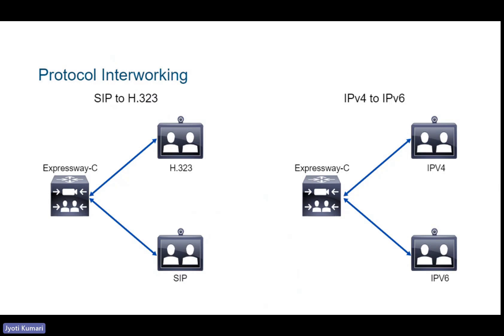Protocol interworking is supported on Expressway C, enabling H.323 and SIP endpoints to communicate with one another. This interworking feature is off by default. If you have different endpoints like SIP and H.323, or even IPv4 and IPv6 implementations in your network, you can enable interworking to make them work together. This ensures that collaboration is not restricted to a specific protocol. Companies that have older traditional H.323 endpoints alongside new SIP endpoints or SIP-specific services would need interworking enabled for seamless communication.